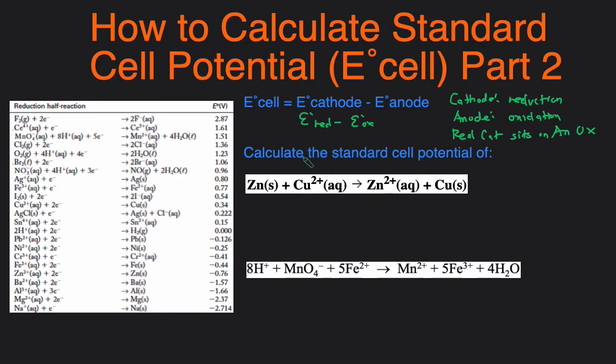So that means we need to figure out what's oxidized and what's reduced to be able to use this equation. Let's take a look at some examples. Calculate the standard cell potential of this reaction. There's a couple ways you can determine what's oxidized and what's reduced. We'll start with the most standard way, which is by using oxidation number.